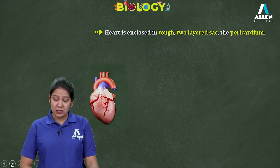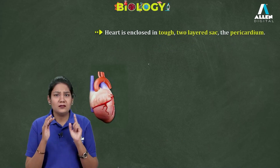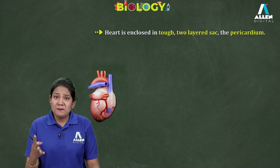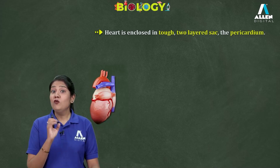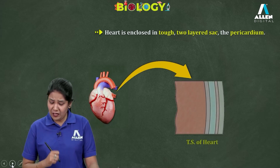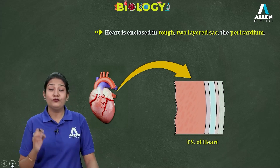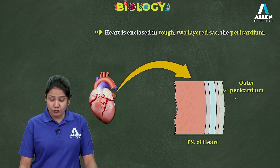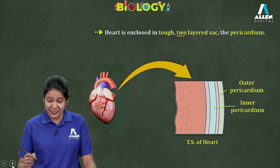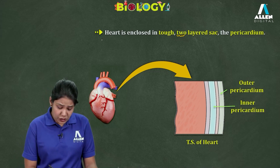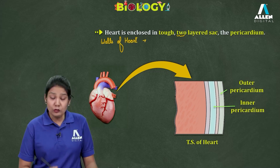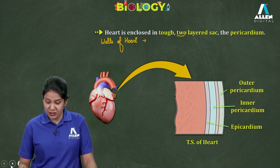Our heart is well protected by a tough two-layered sac called the pericardium. The pericardium allows frictionless movement of our heart and also protects it from shock. In the transverse section of the heart, we can see the outer pericardium and the inner pericardium as the two layers.